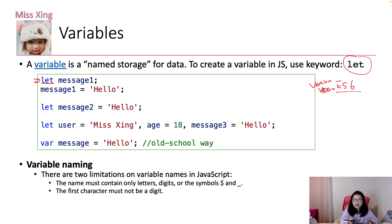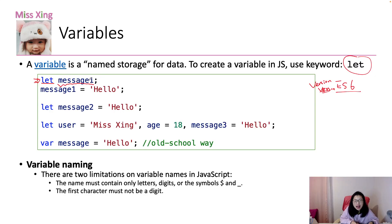A keyword is a reserved word, which means 'let' carries special meaning inside the JavaScript language. The special meaning is we use 'let' to define a variable. And this is a variable name called 'message1'. When we define this variable, we add a semicolon. At this point, message1's value is going to be undefined — we will talk about undefined later.